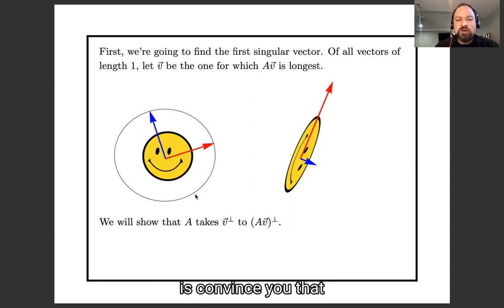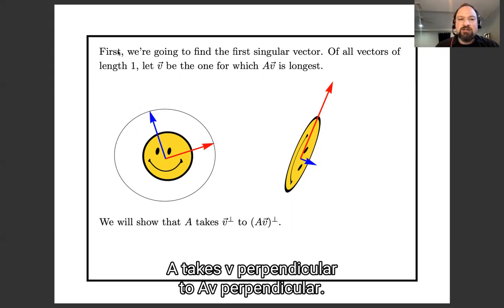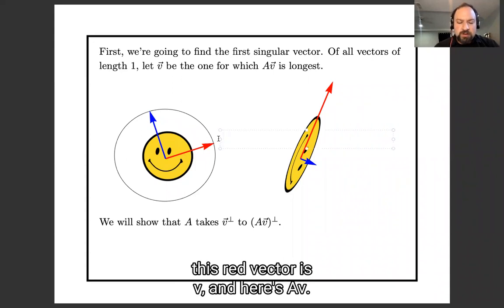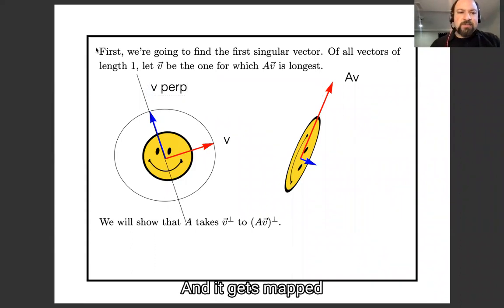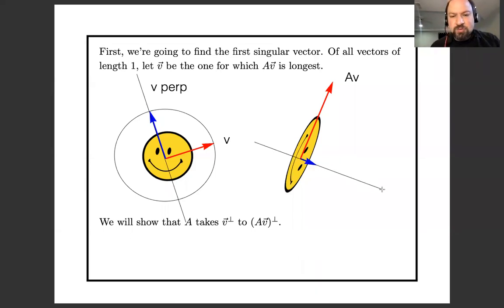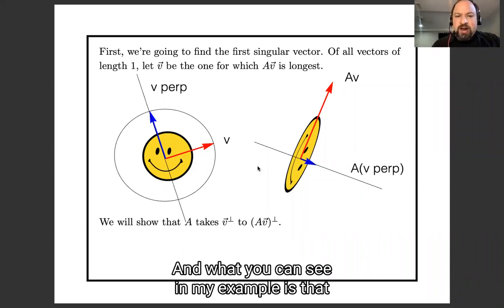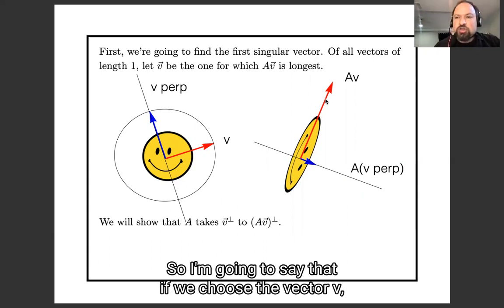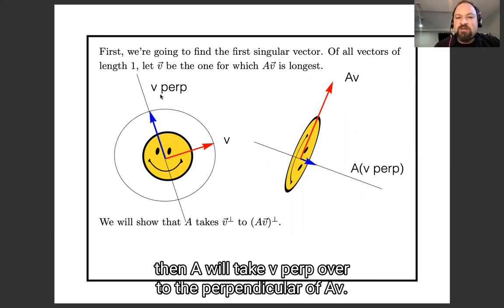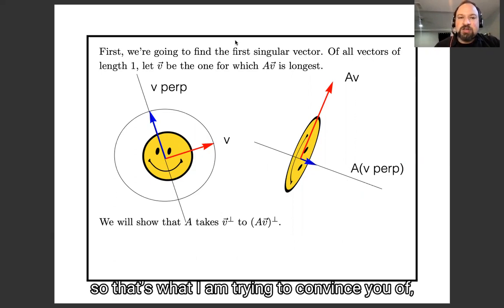The first thing I want to argue is that A takes V perp to AV perp. In my picture, this red vector is V, here's AV, and the line through the blue vector is V perp — it gets mapped over to the line through the blue vector on the other side. You can see in my example that this image line is still perpendicular to AV. I'm going to argue that if we choose the vector V which gets stretched the most, then A will take V perp over to the perpendicular of AV. That's what I'm trying to convince you of.